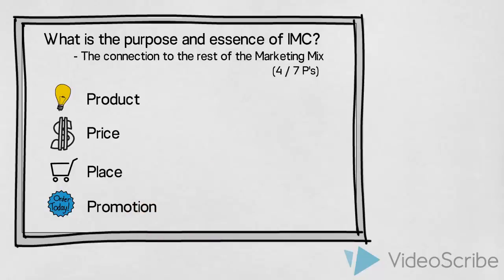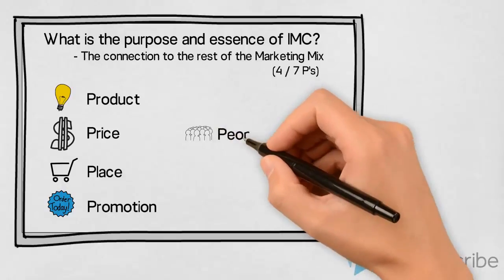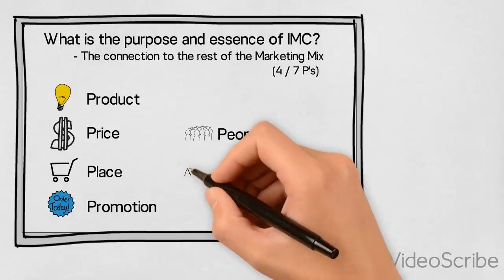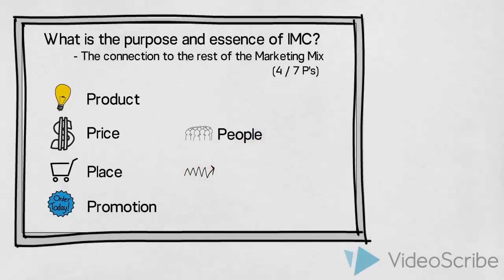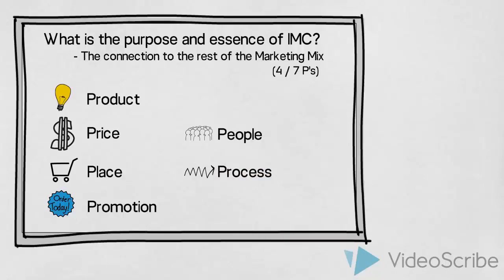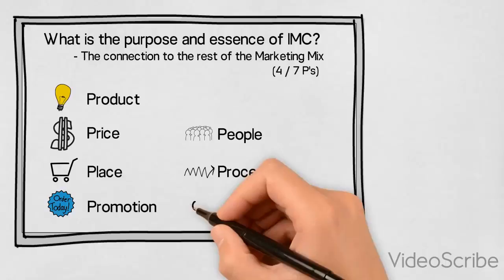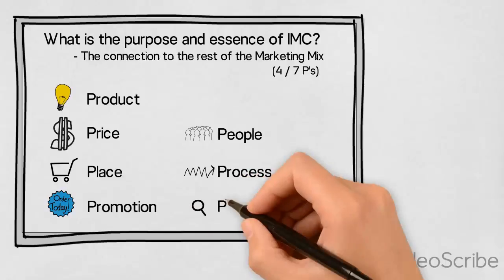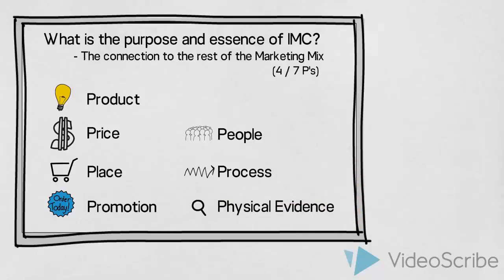If we are dealing with an offering that is better described as a service, or perhaps a product that includes large elements of service, we might also want to look at the additional three P's: the people involved in delivering the service, the process that our customers will go through to receive our service, and the physical evidence — any visible or tangible elements that the customer will see, hear, or in other ways experience when receiving the service.